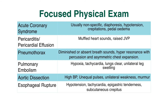Aortic dissection can have high blood pressure, unequal pulses, unilateral weakness, or a murmur. Esophageal ruptures have low blood pressure, tachycardia, epigastric tenderness, or subcutaneous crepitus.